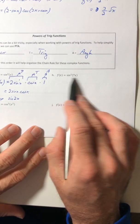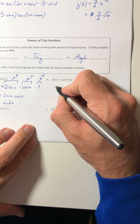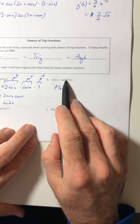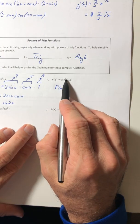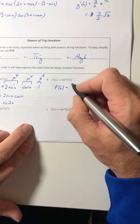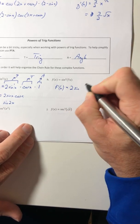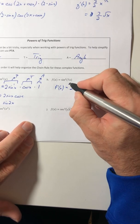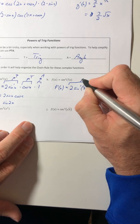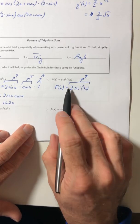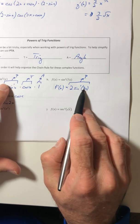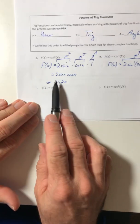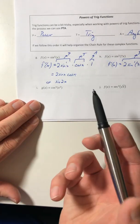Part h: using PTA again. The P — use the power rule, pull the power down, decrease the power by 1. The angle stays the same; the angles and trig functions never change during the derivative steps unless you're applying an identity afterward.